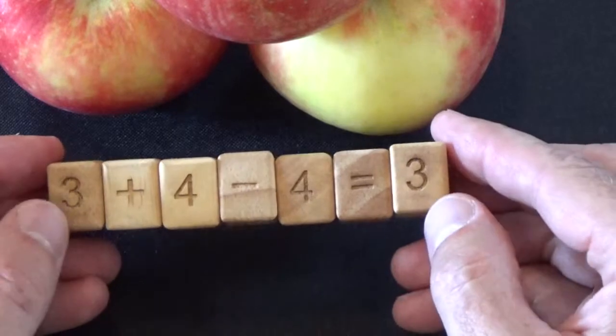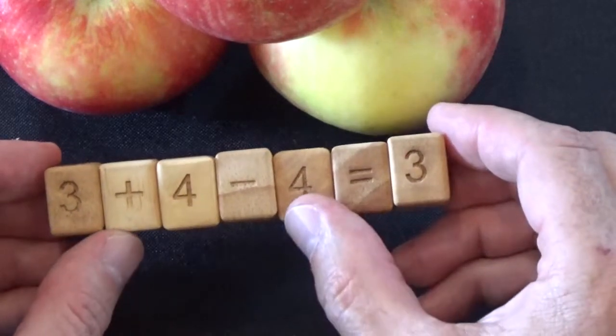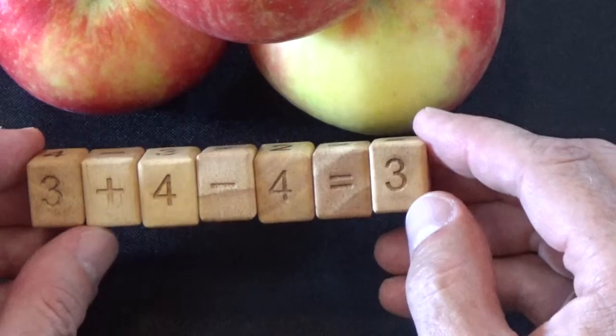Flip it once more. 3 plus 4 is 7 minus 4 equals 3. That is correct.